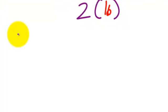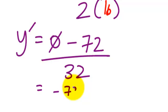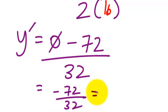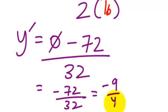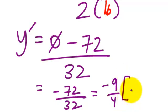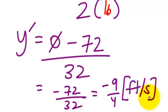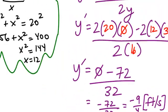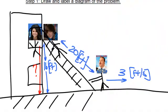Now we have all the pieces in place to solve for y prime. The rest is algebraic, so simplifying gives us negative 72 over 32, which simplifies to negative 9 over 4. The most important thing is units — it's a rate. What are our rate units? Feet per second. So my answer is negative 9 over 4 feet per second. And now we know how fast Justin Bieber is falling 16 feet above the ground.